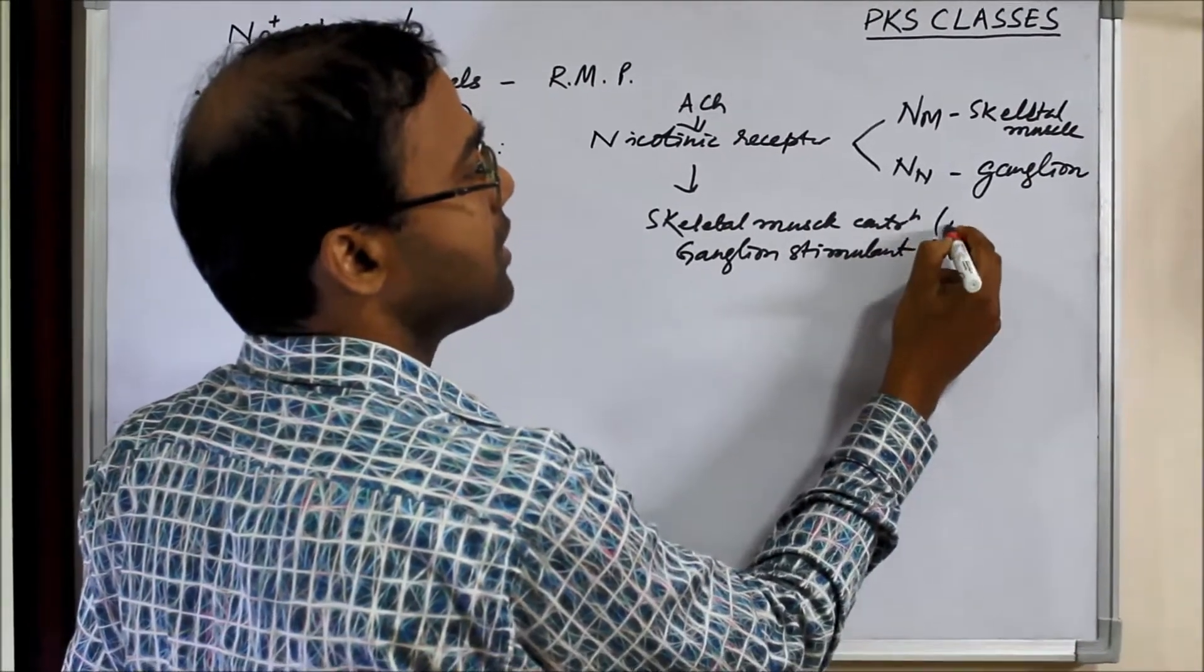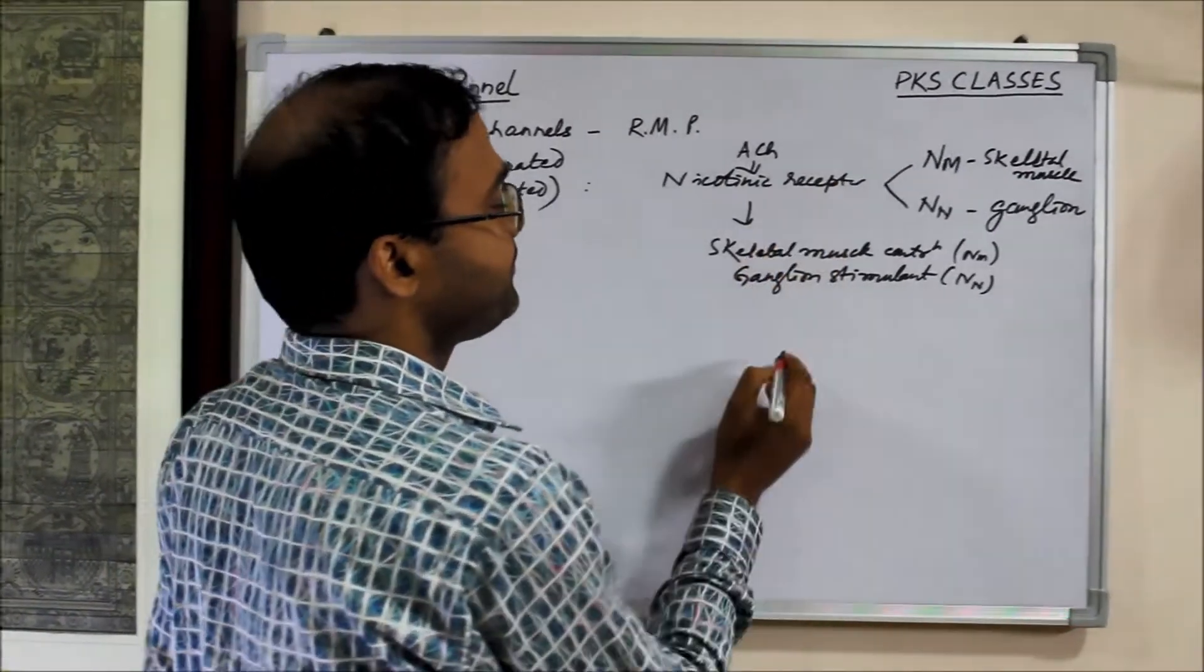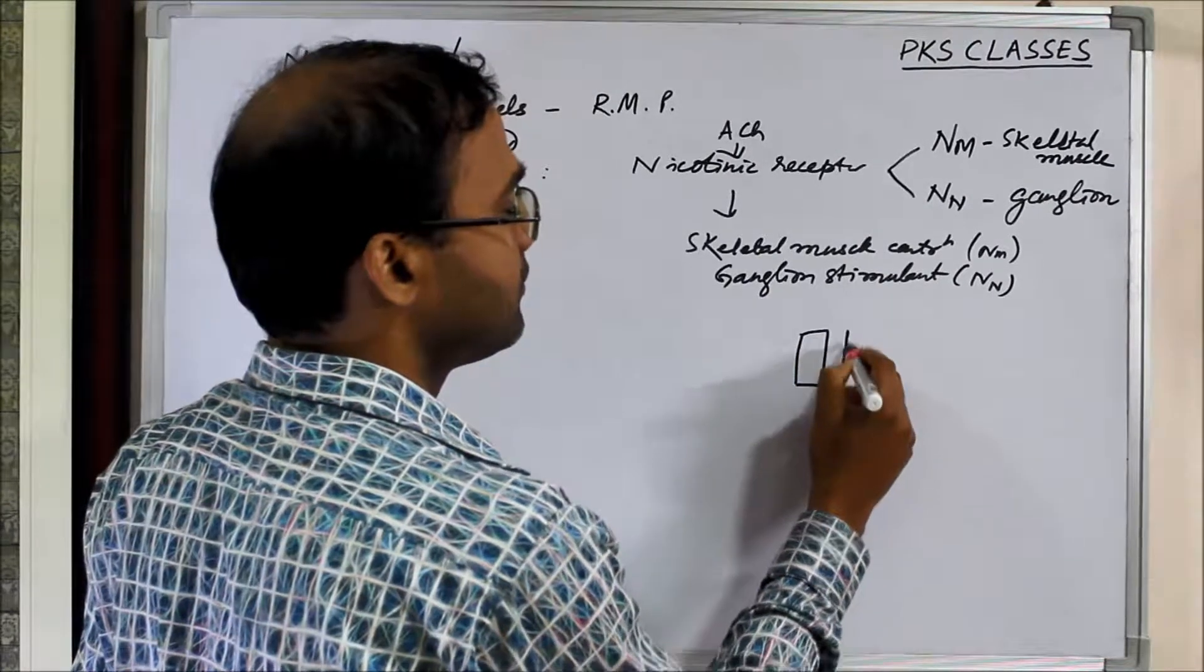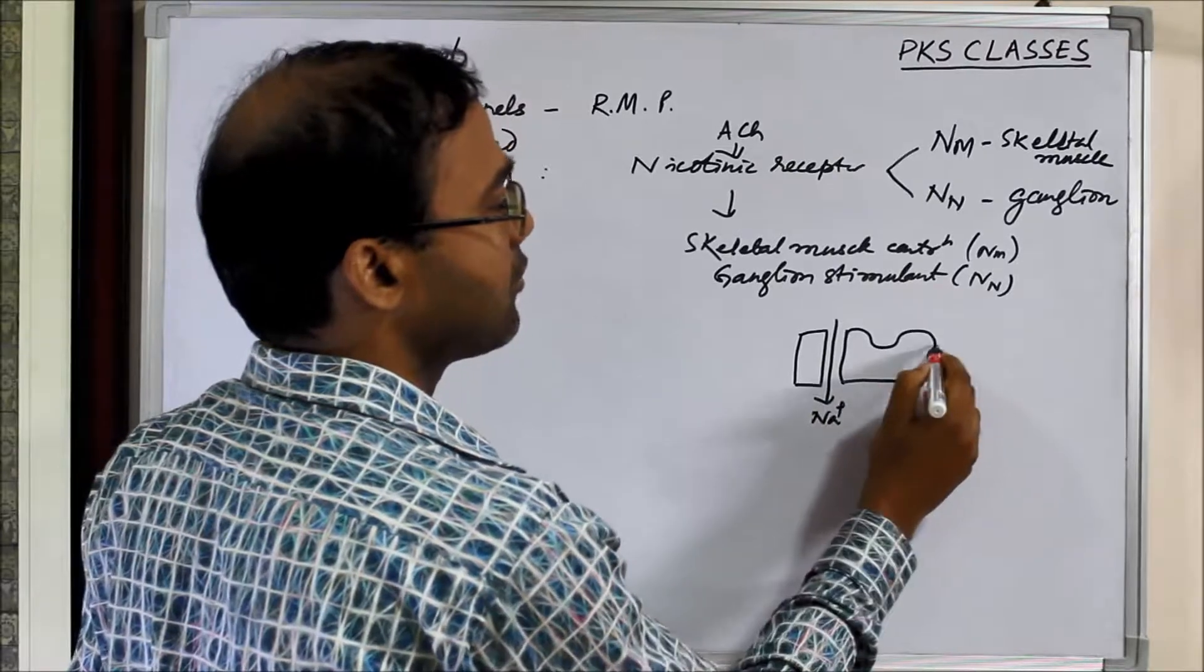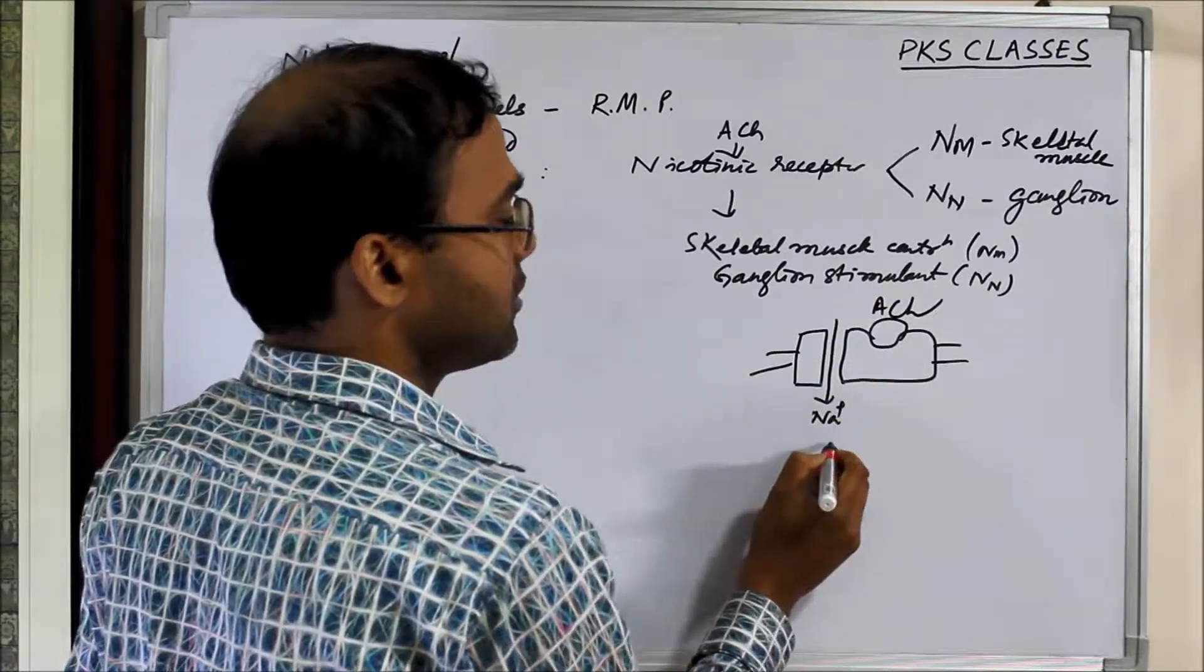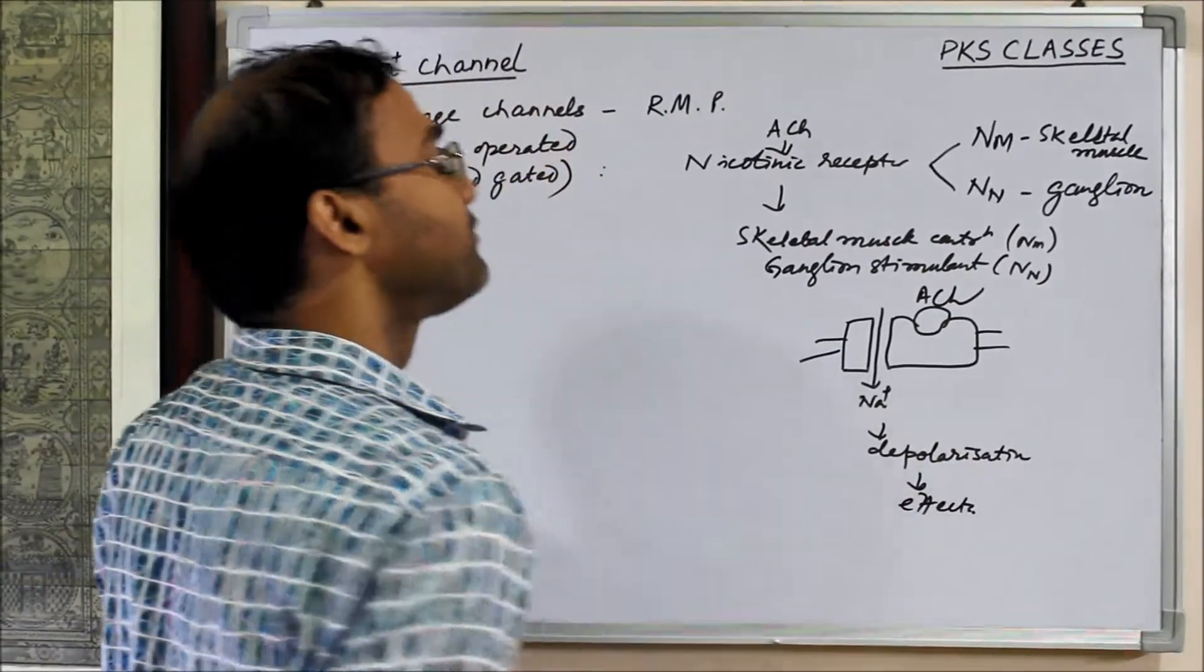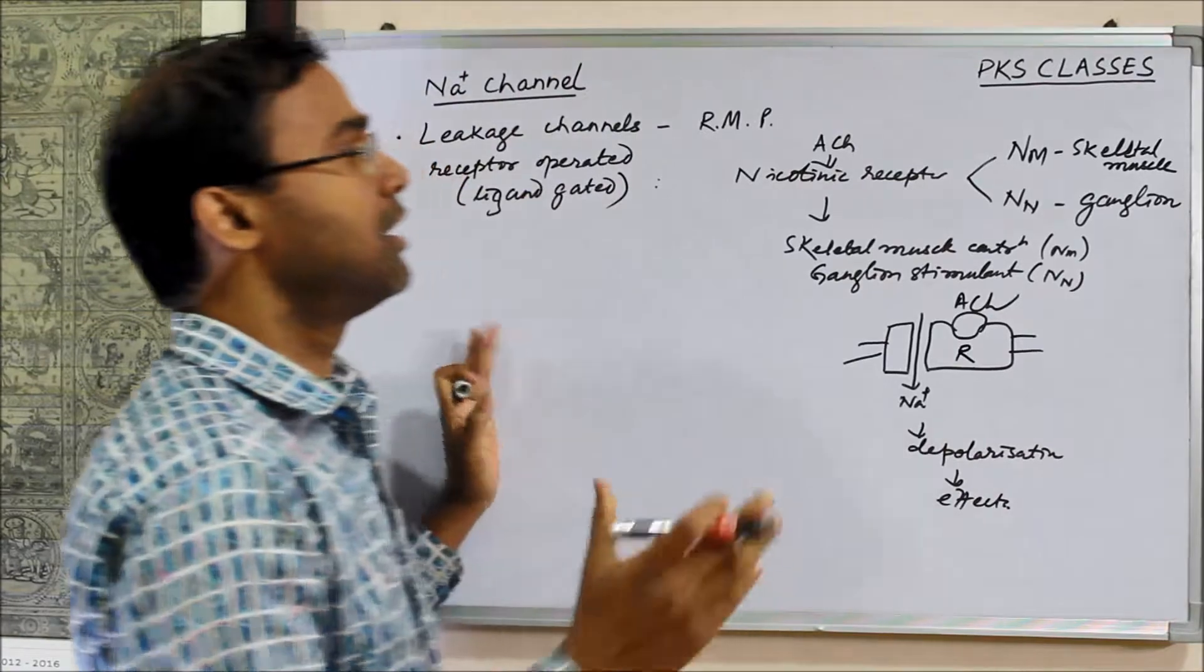This is NN and this is ligand gated. Here you can say this is a ligand gated channel and here acetylcholine binds and this causes depolarization and it gets its effects. Acetylcholine is the ligand which binds to the receptor and this ion channel opens and shows its action.